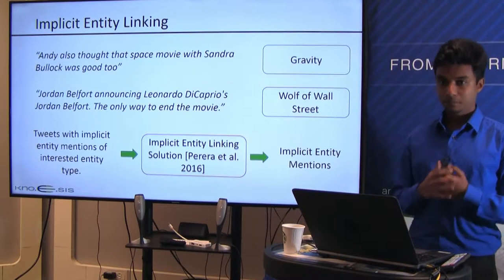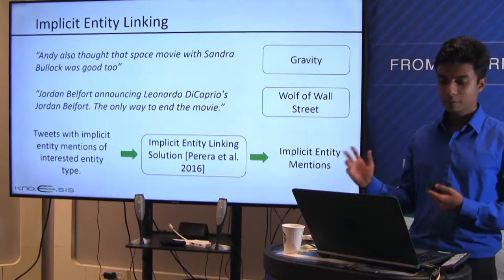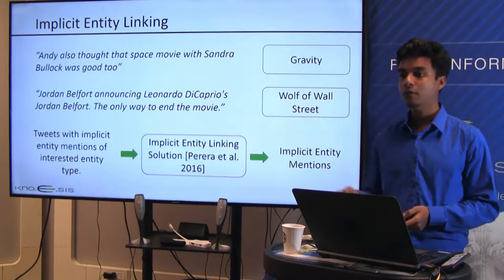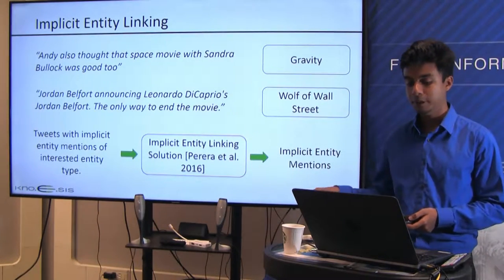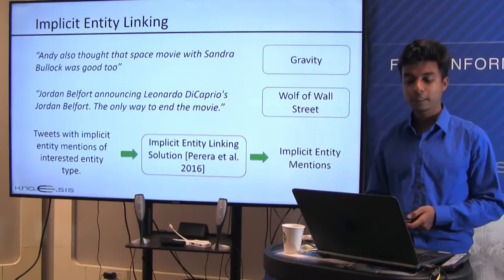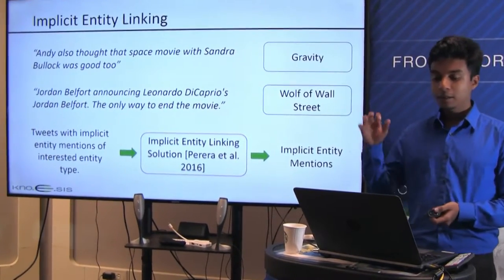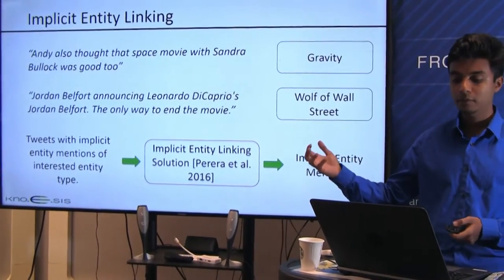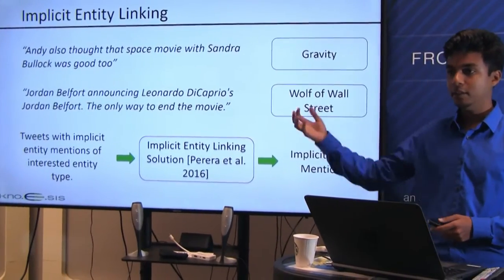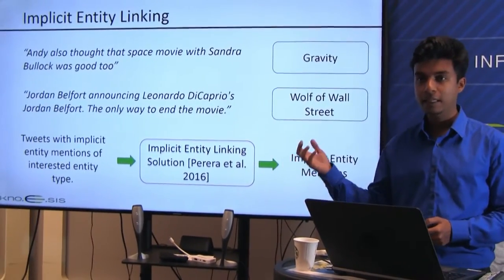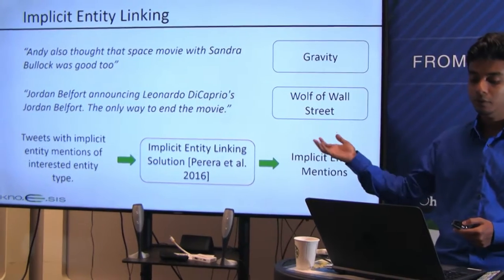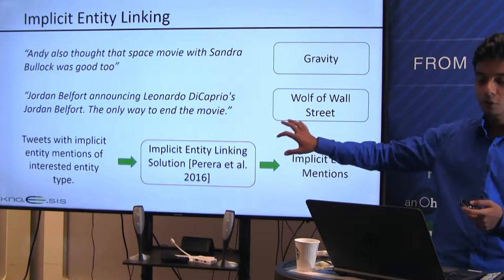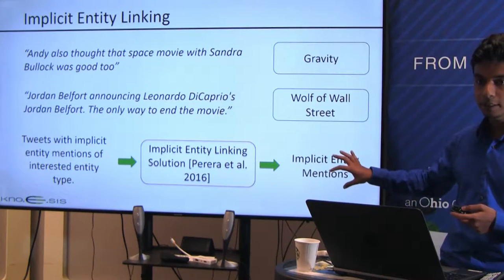Sujan addressed in his dissertation the topic of implicit entity linking, which aims at linking tweets that have implicit entity mentions of a particular entity type to a knowledge base. For example, given a tweet like 'Andy also thought that space movie with Sandra Bullock was good too,' his algorithm will identify the implicit entity mention as the movie Gravity. Similarly, a second tweet has an implicit entity mention of the movie Wolf of Wall Street.